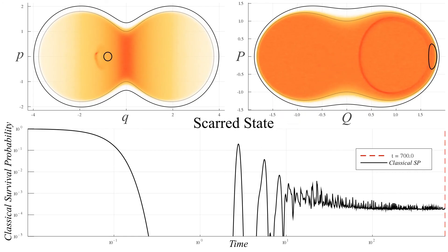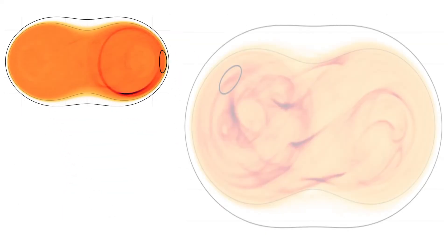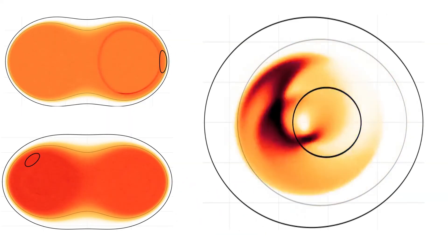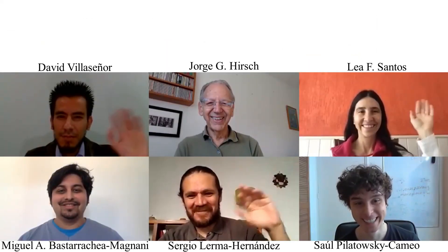Still, a more densely populated thin region is visible for very long times. This region contains an unstable periodic orbit, responsible for the periodic revivals of the classical survival probability and the source of the scarring of the quantum states.